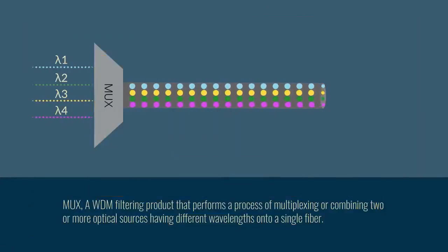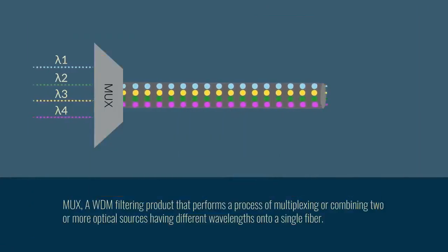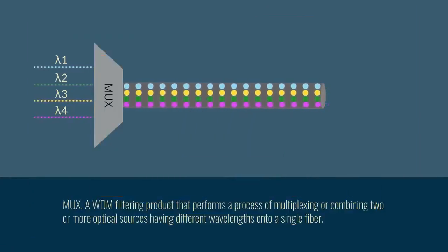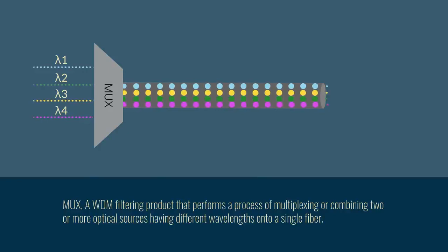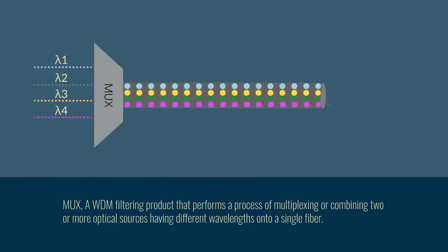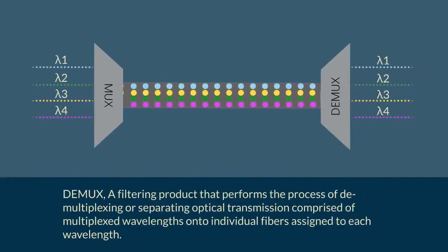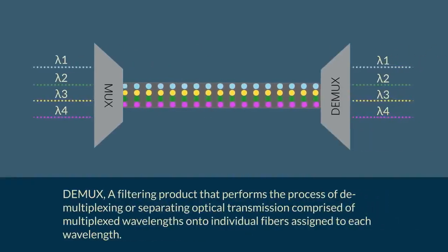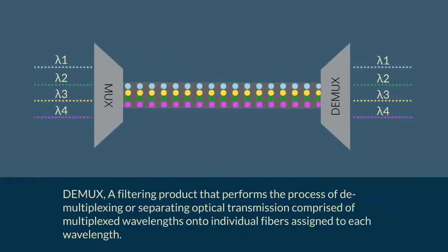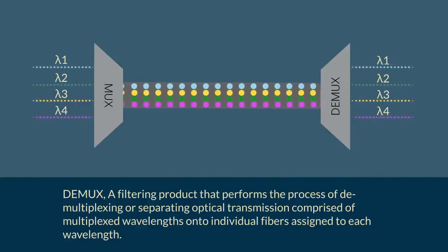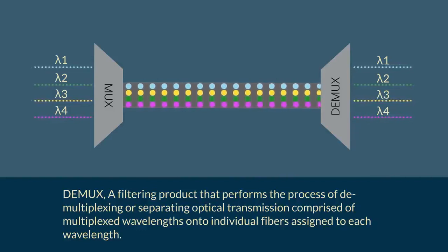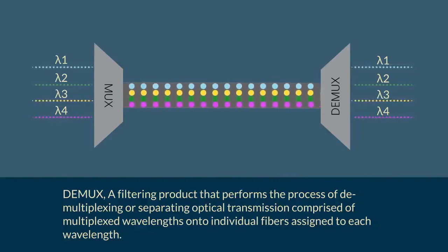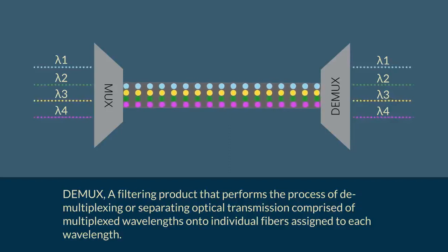MUX performs a process of multiplexing, or combining two or more optical sources having different wavelengths onto a single fiber. DMUX performs a process of demultiplexing, or separating optical transmission comprised of multiplexed wavelengths onto individual fibers assigned to each wavelength.